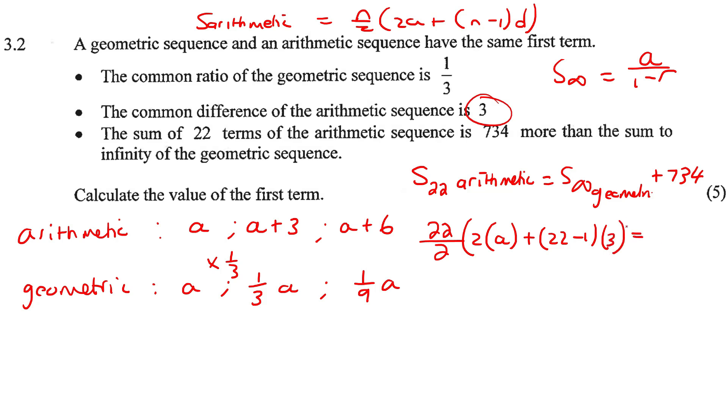Okay, now that's equal to this formula. So it's a over one minus r, which is a third, and then plus 734. Guys, come on. How easy is that? I mean, look at this. The only unknown is a. So now we're just going to simplify.